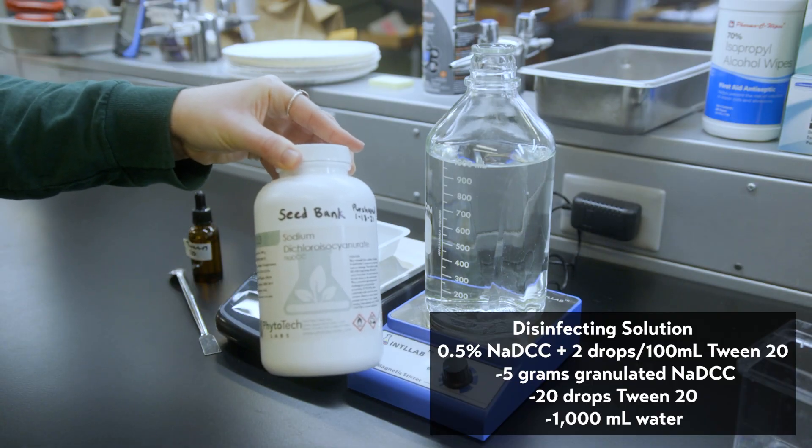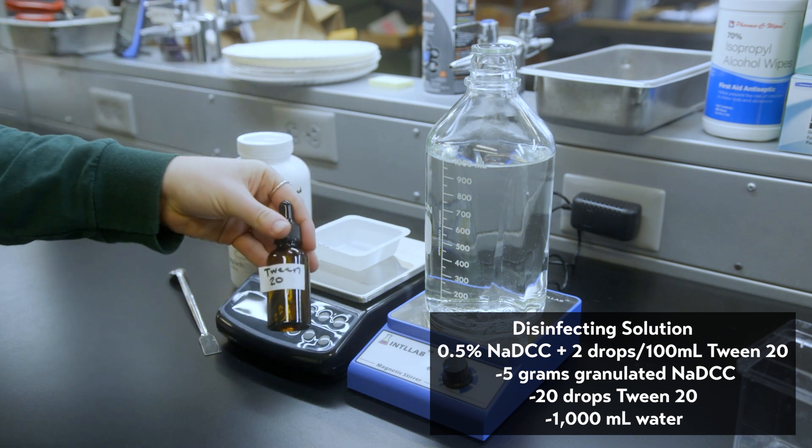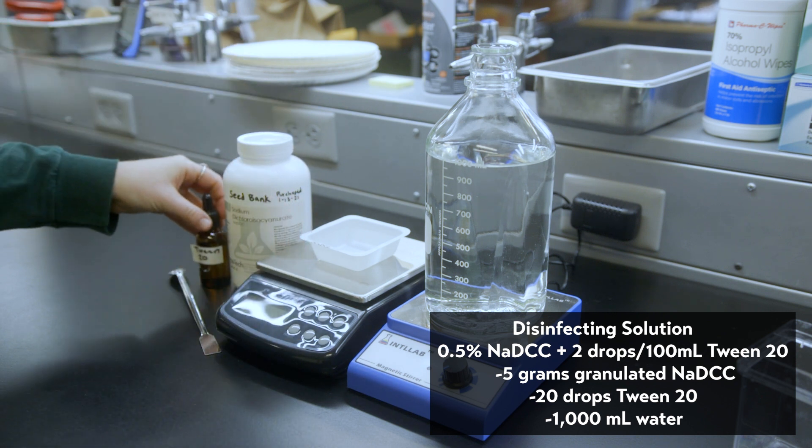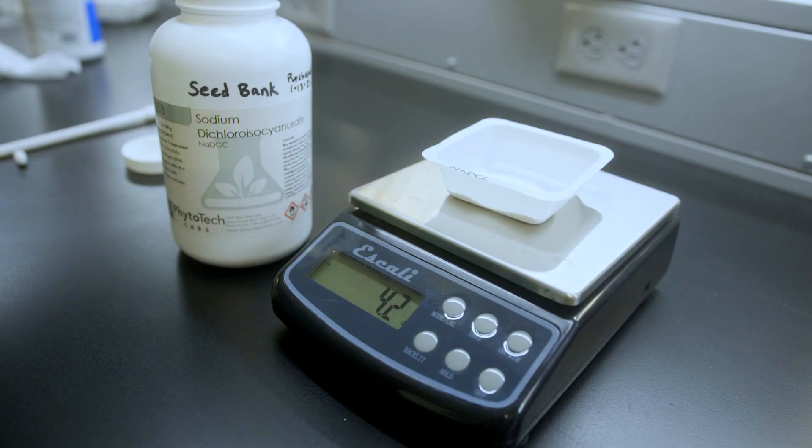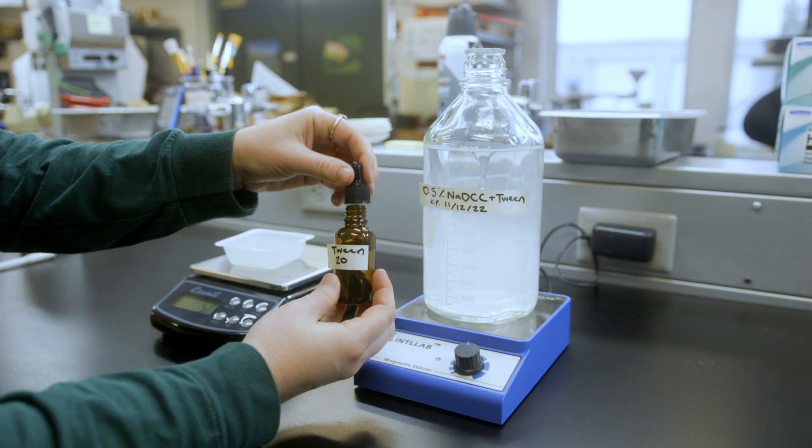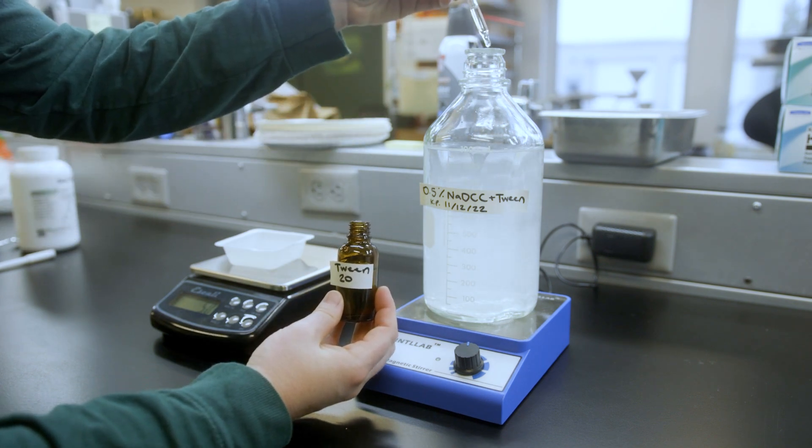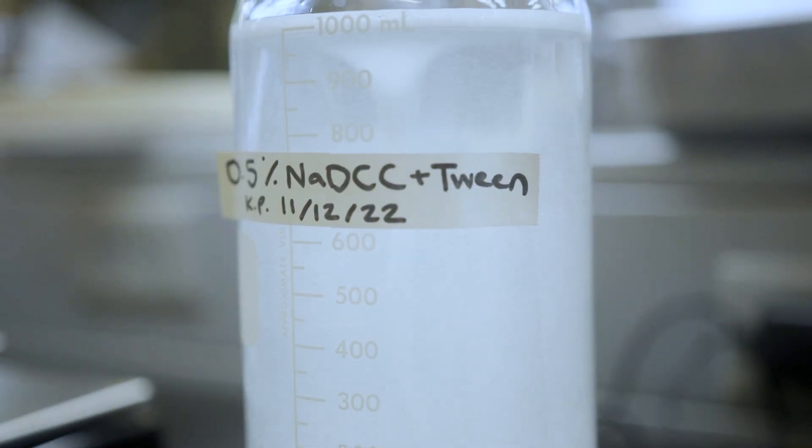Next I prepare my disinfecting solution. I use NADCC with Tween 20. This is mixed in 1,000 milliliters of water and labeled. 5 grams of NADCC is mixed with the water on a stir plate. 20 drops of Tween is then added. This will give you a 0.5% concentration of NADCC.